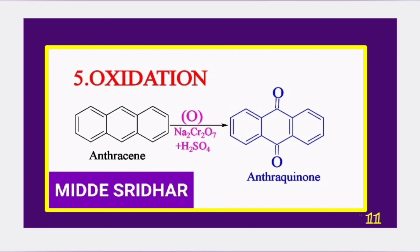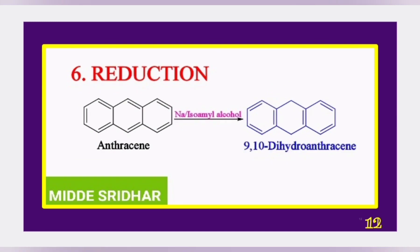Anthracene on oxidation with acidified sodium dichromate produces anthraquinone. Anthracene on reduction with sodium in the presence of isoamyl alcohol produces 9,10-dihydroanthracene.